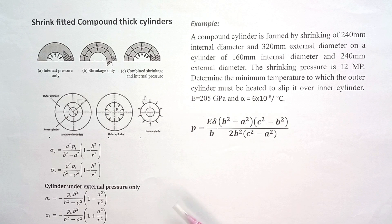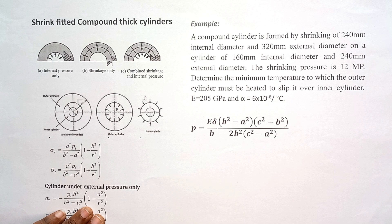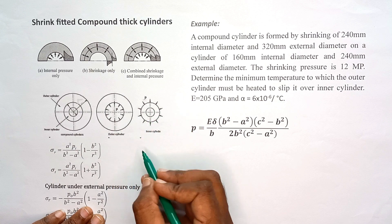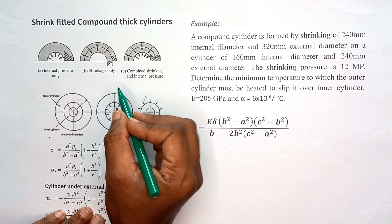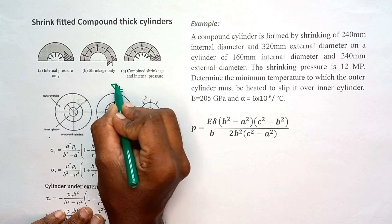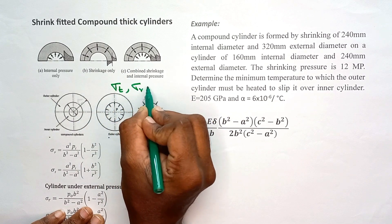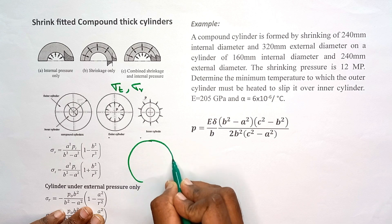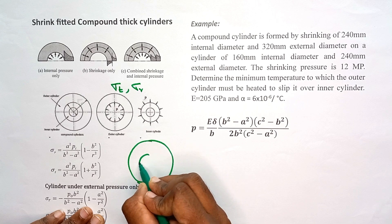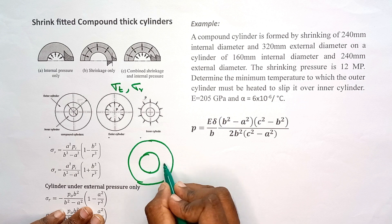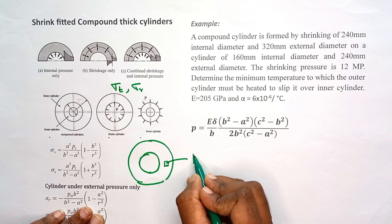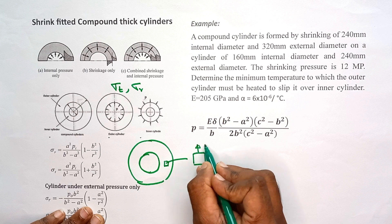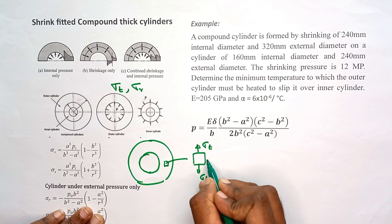First I will explain the theory behind the shrink fitting process. Shrink fitting is a method to strengthen cylinders which are subject to internal pressure. When a cylinder is subject to internal pressure, two different stresses are developed: tangential stress Sigma T and radial stress Sigma R. If you take the whole cylinder subject to internal pressure only, these stresses act in the tangential direction Sigma T and the radial direction Sigma R.